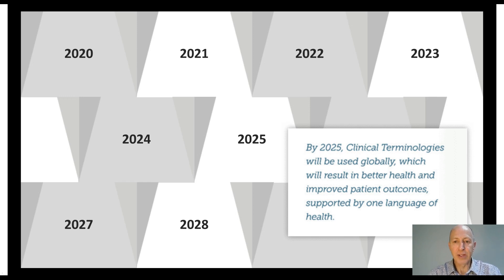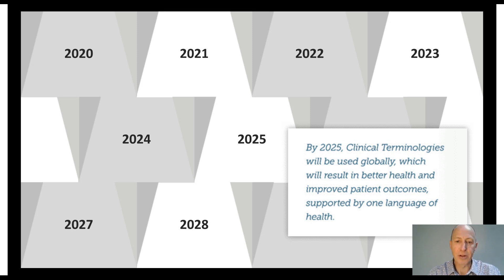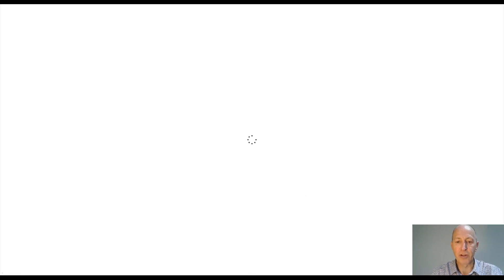SNOMED International's new five-year strategy, just recently published this year, has the vision that by 2025, clinical terminologies will be used globally, which will result in better health and improved patient outcomes, supported by one language of health — and that's effectively the value proposition for SNOMED CT. The strategy has products and services goals, adoption goals, and an innovation goal. SNOMED will be at the centre of terminology and classification globally, describing it as a terminology integrator — the hub between the other terminologies that exist out there, the common language. The five-year strategy requires the product's terminology and tools to be approachable, and that's a word from the strategy document which is well worth a read.